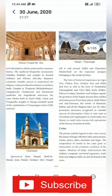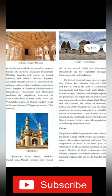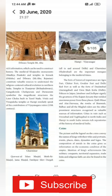Listen carefully, children. First point: the pictures on coins convey the names of kings with their titles and portraits, events, places, dates, dynasties, and logos. When a king introduced a coin, he inscribed his name, titles, portrait, significant events, the place where the coin was released, the date, the dynasty, and the logo on that coin.